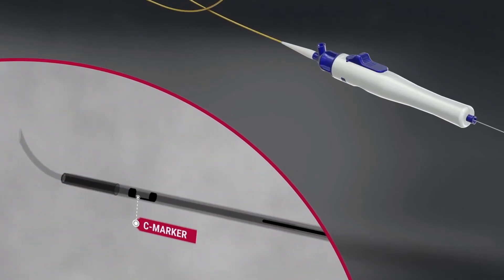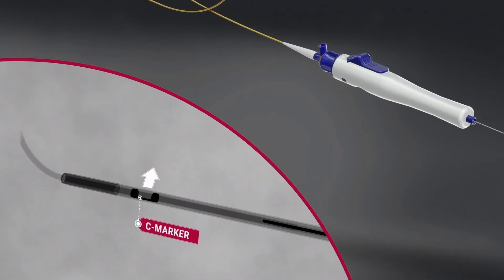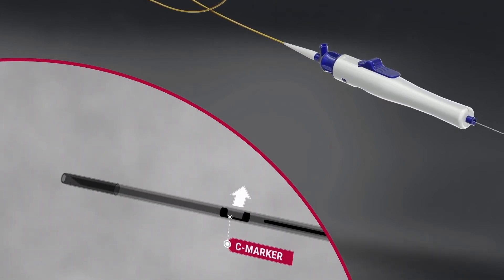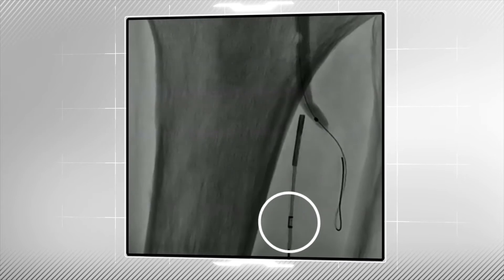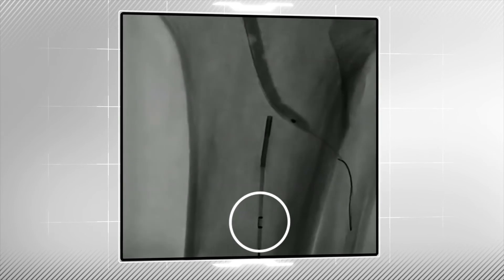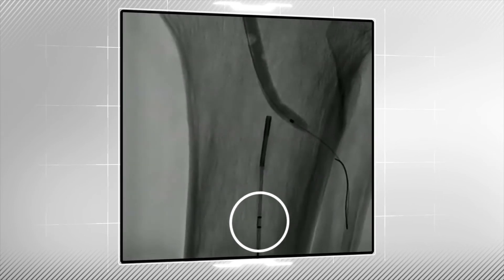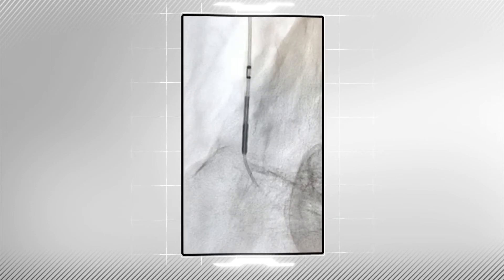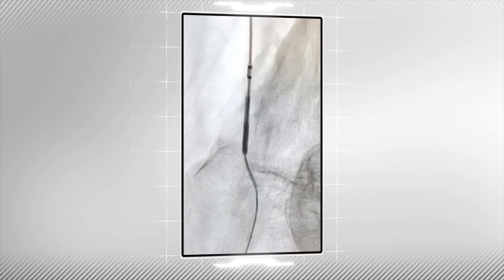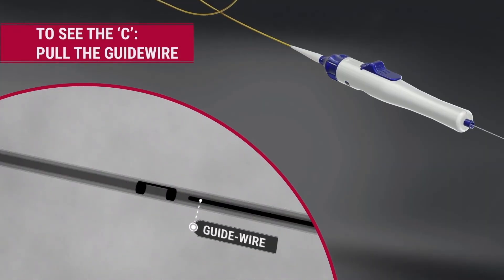To control the direction of the needle, attention should be paid to the radio-opaque C-shaped marker on the needle. It indicates the direction of the needle tip — specifically, the open side of the C indicates the direction of the needle tip. The marker is fused to the needle and is easily visualized under X-ray. Advancement of the needle correlates with the advancement of the C-shaped marker. For optimal visualization of the marker, the guide wire should be pulled back proximal to the C-shaped marker.